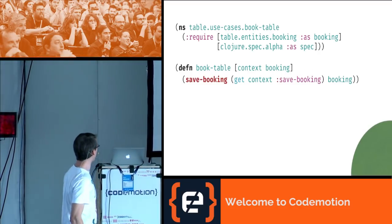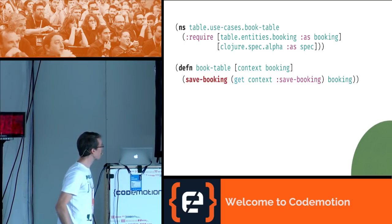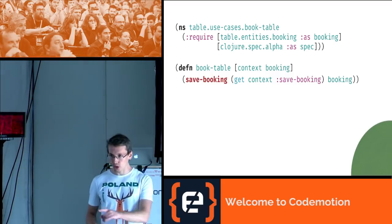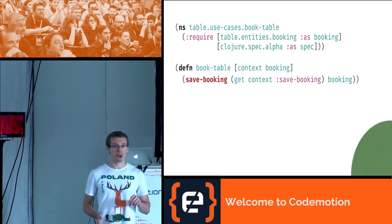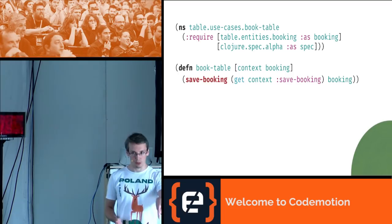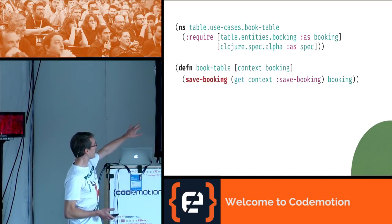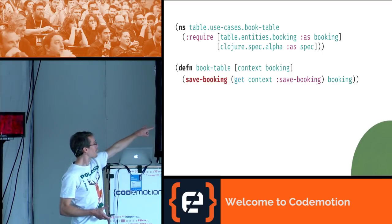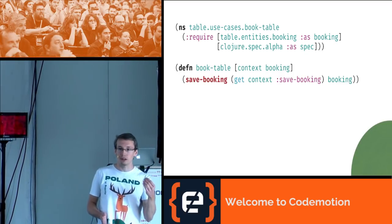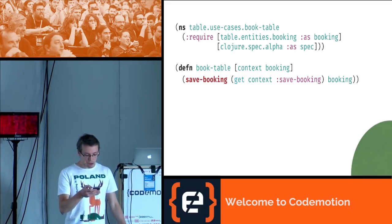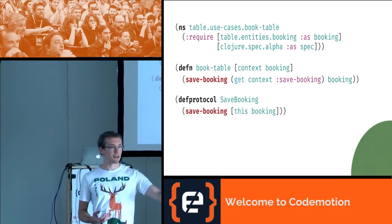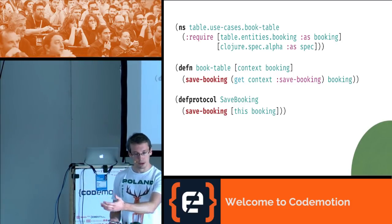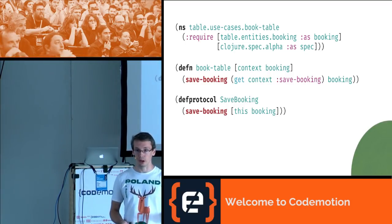Now let's use it in our first use case — let's go to the green area and talk about booking a table. In the book-table namespace I define a function book-table taking two arguments: context and booking. Booking is what you've seen a minute ago, and context is a map I use for dependency injection — this is how I inject all the moving parts of our application. In its body I'm calling a save-booking function, extracting from my context an instance of save-booking. Below you can see save-booking defined as a protocol — it's up to you to implement it against a Postgres database or an in-memory storage for your tests. So far no technology is involved — no databases, no HTTP — just pure logic, very testable.